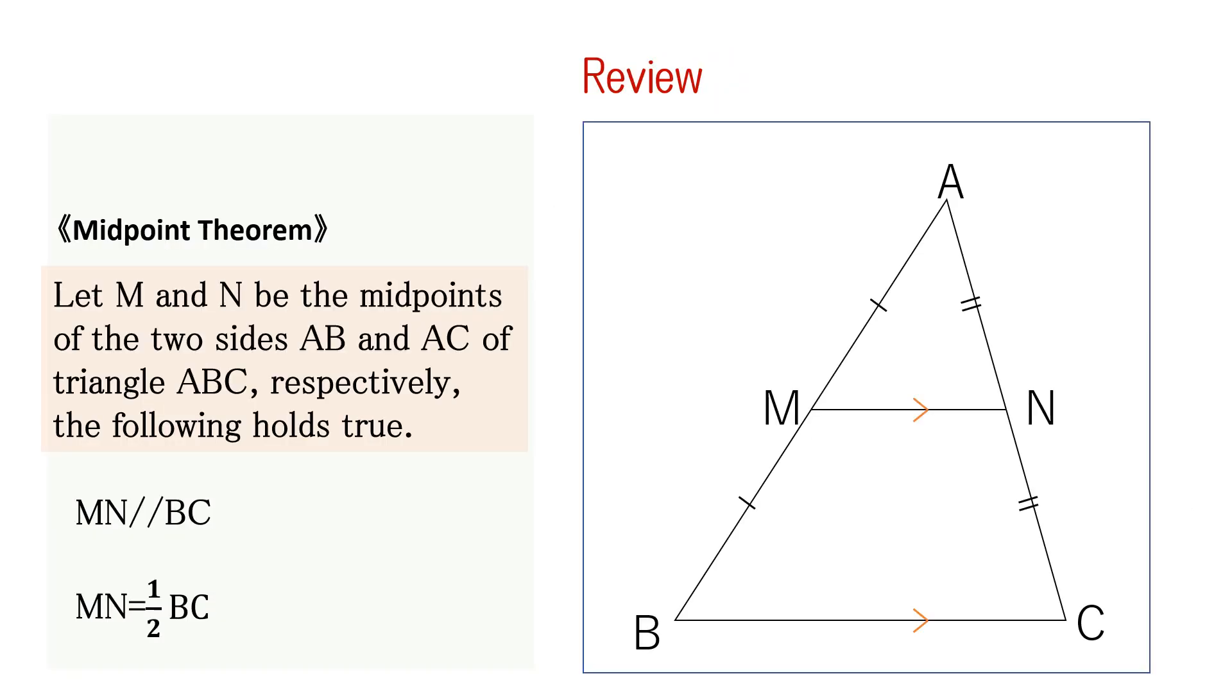Finally, let's review what we have learned. Look at the figure on the right. The midpoints on the sides AB and AC of triangle ABC are points M and N.